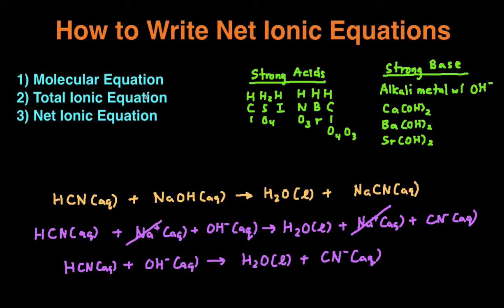Then we write our total ionic equation. What that means is that you break up any strong acids, strong bases, and soluble ionic compounds into the cation and then the anion, which means the positively charged and negatively charged ions. And then lastly, to get the net ionic equation, you just cross out any ions that are the same on both sides. And then what you're left with is the net ionic equation.